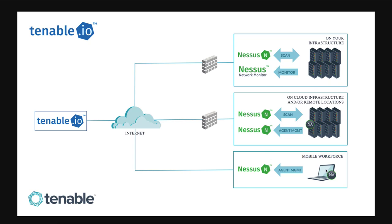For your remote workforce — users that are working from home or coming on and off your network frequently — we have the Nessus agent. This is not a required part of Tenable.io, but it is an option to gain additional visibility into those assets that might be hard to reach or might not be on your internal network all the time. As long as an internet connection is present, you'll be able to run a scan against an asset with a Nessus agent installed on it. They are designed to be lightweight and low-impact to the endpoint, and all that vulnerability data gets pushed up into Tenable.io.